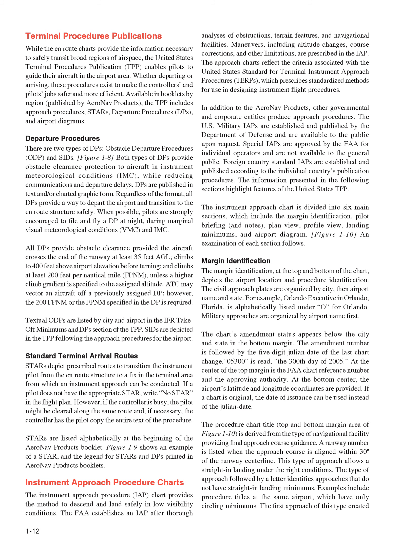The Instrument Approach Chart is divided into six main sections: Margin Identification, Pilot Briefing and Notes, Plan View, Profile View, Landing Minimums, and Airport Diagram. The Margin Identification, at the top and bottom of the chart, depicts the airport location and procedure identification. Civil Approach Plates are organized by city, then airport name and state. For example, Orlando Executive in Orlando, Florida, is alphabetically listed under O for Orlando. Military Approaches are organized by airport name first. The chart's amendment status appears below the city and state in the bottom margin. The amendment number is followed by the five-digit Julian date of the last chart change. At the center of the top margin is the FAA chart reference number and the approving authority. At the bottom center, the airport's latitude and longitude coordinates are provided.